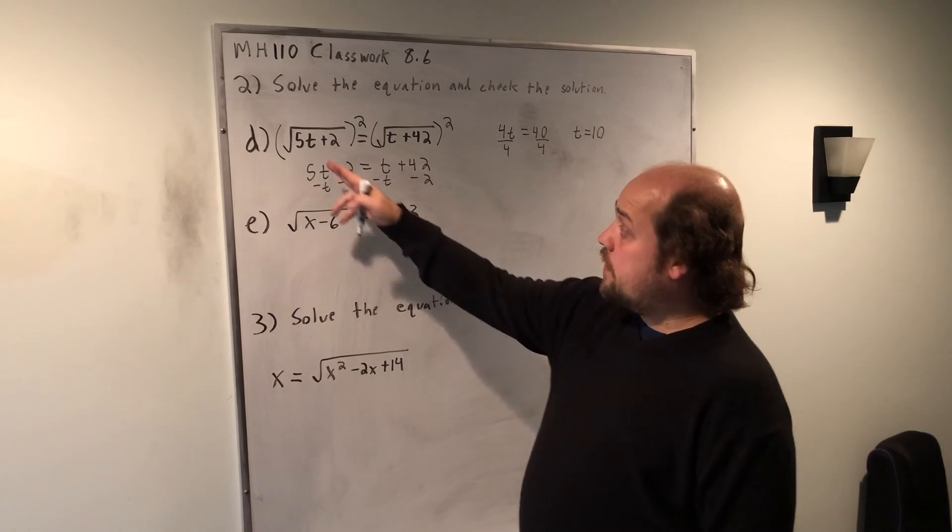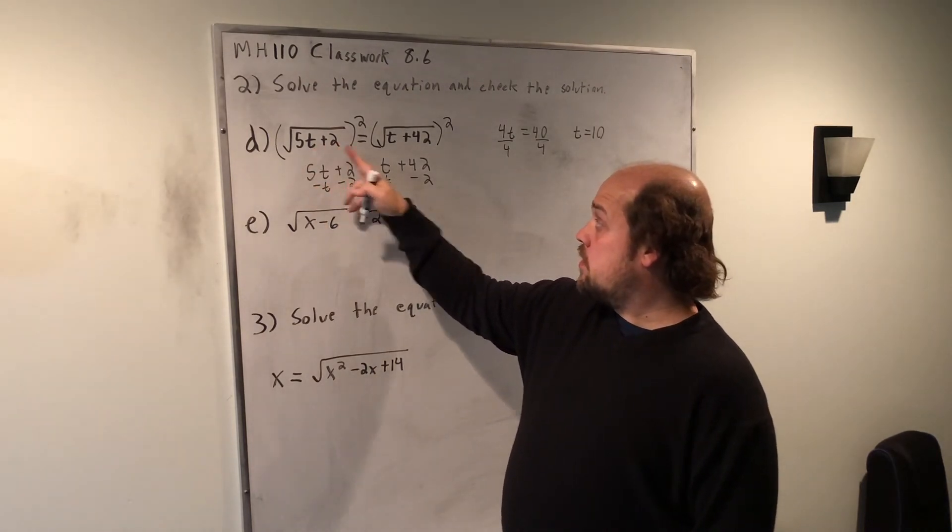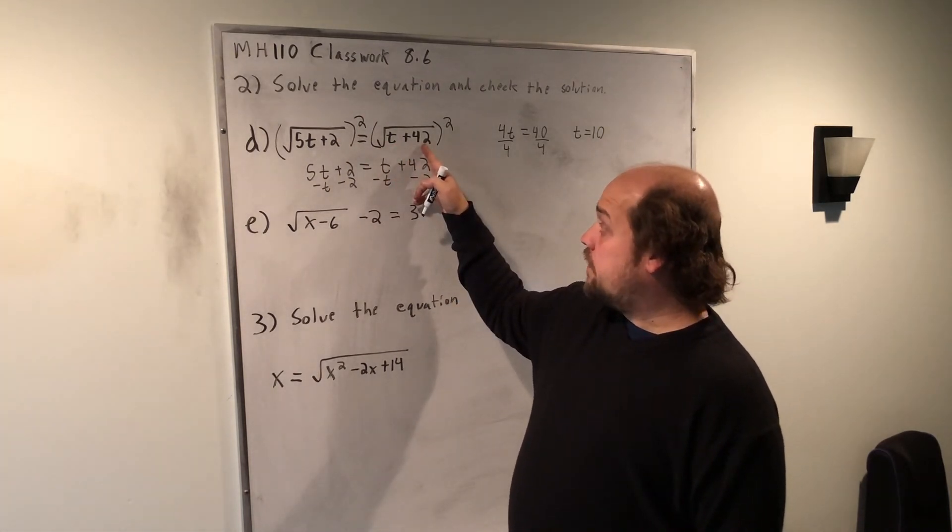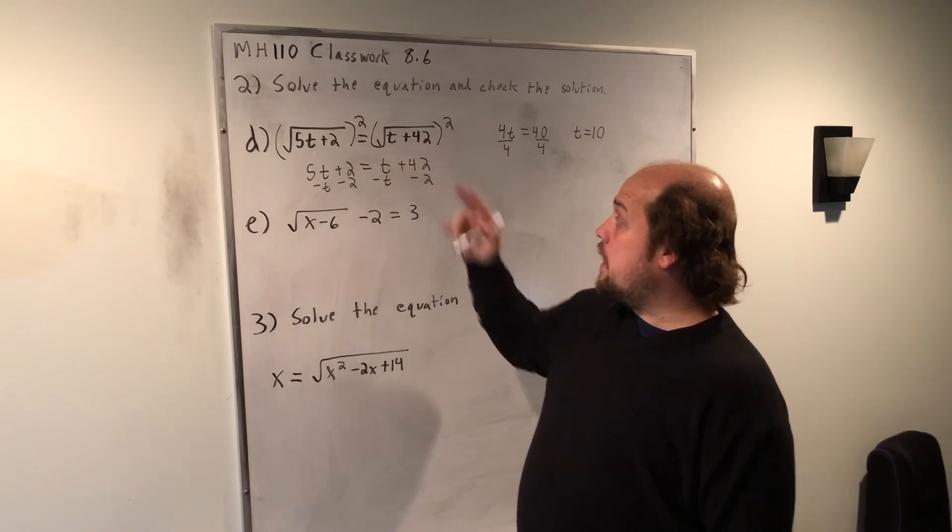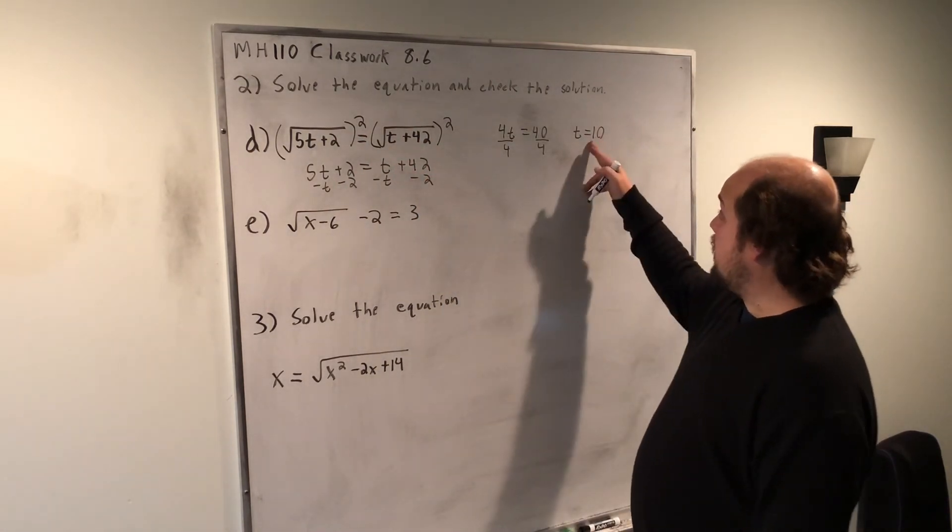You'll see that if I put a 10 in here, 5 times 10 is 50, plus 2 is 52. If I put a 10 in here, 10 plus 42 is 52. So, they both be equal to the root of 52, which means that it is a true statement, and that is my correct answer.